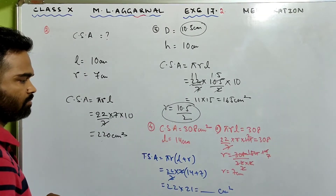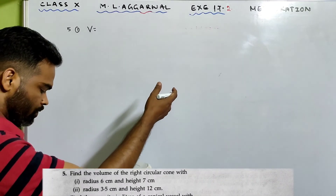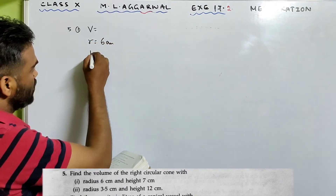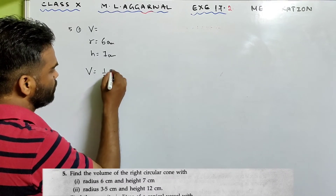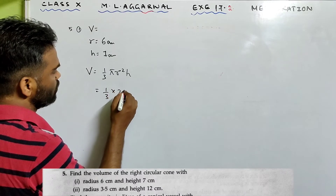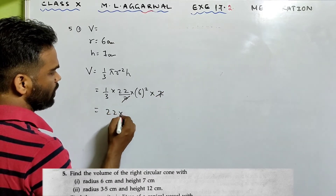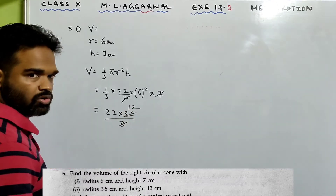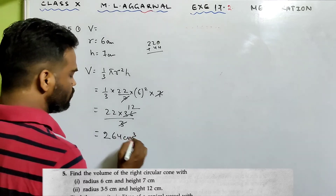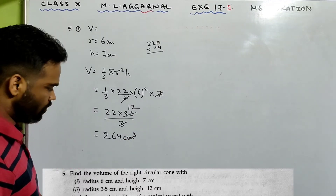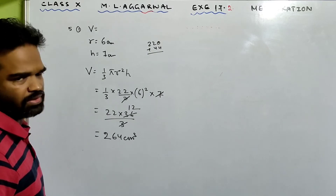Number 5 part 1: Find the volume of a right circular cone with radius 6 cm and height 7 cm. Volume = (1/3)πR²h = (1/3) × (22/7) × 6² × 7 = (1/3) × 22 × 36 = 22 × 12 = 264 cm³. Done — very easy. Part 2 is exactly the same: radius and height are given, find the volume.